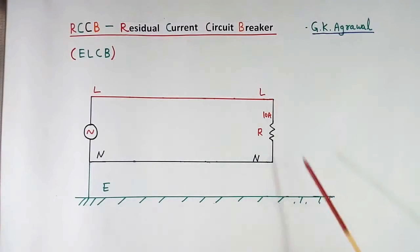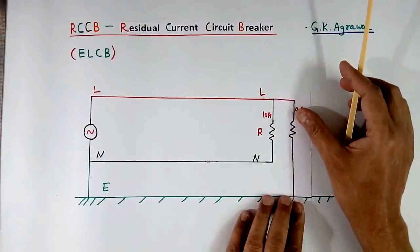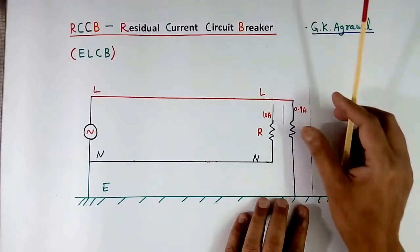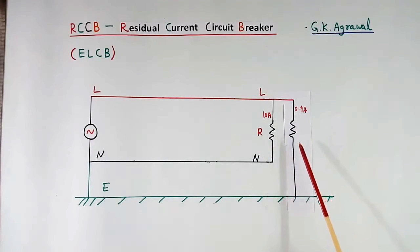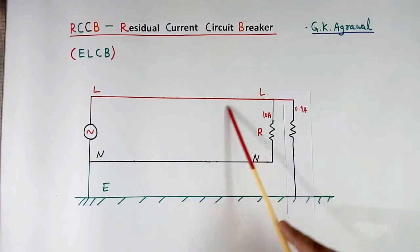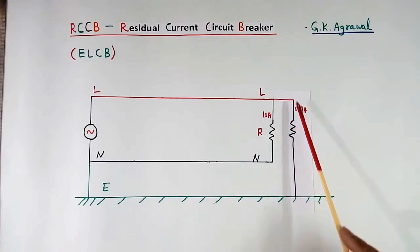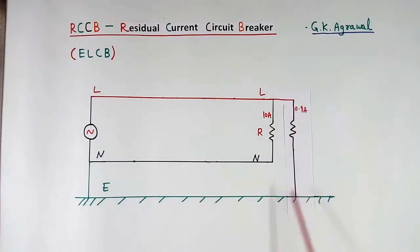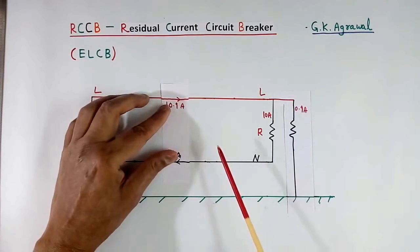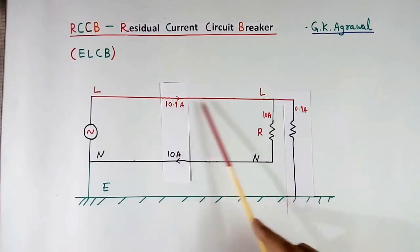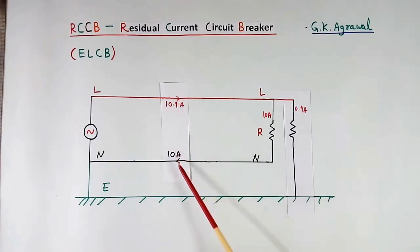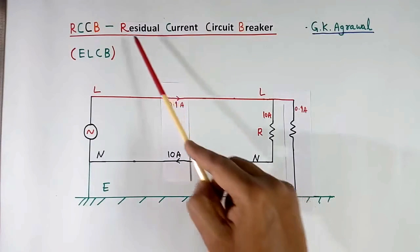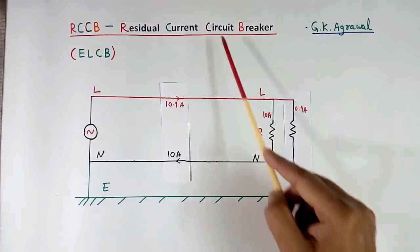Now suppose between line and earth we connect a load. This current may be because of insulation failure or because of a human body. Now this line wire will carry the load current plus this leakage current. This current is not flowing in the neutral. So the line current will be more than the neutral current. Now if we add these 2 currents instantaneously, there will be a net 0.1 ampere current — that is called the residual current, because of which the circuit breaker will trip.